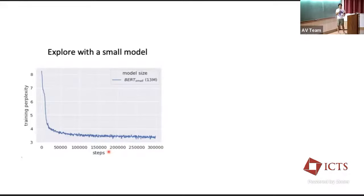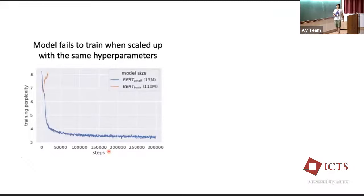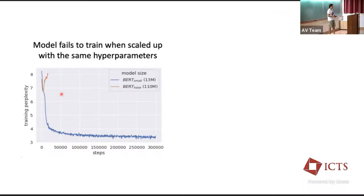Now you can throw $10 million at the problem. But if you're too confident, you're going to see this very unfortunate phenomenon where scaling up actually gives significantly worse performance than the small model you started with. If you put yourself in the shoes of OpenAI, Google, or large Chinese language model companies — each of these can cost 10 to $100 million — then it's really catastrophic to see a phenomenon like this.